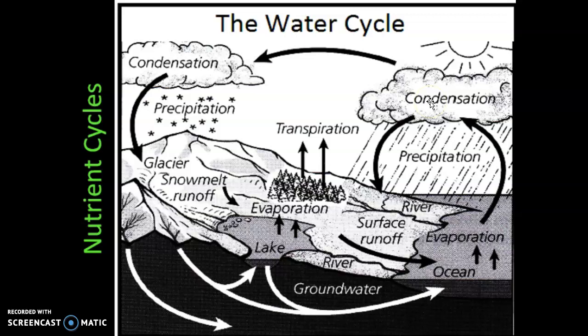As those water droplets fall to the earth, it falls in the form of precipitation, which could be rain or snow. A lot of familiar terms on this diagram. The one term that might be new to you is a process called transpiration, which is nothing more than evaporation of water through the surface of leaves — just evaporation through plants. But the water cycle has literally been part of the science curriculum since first grade, so I'm confident you're pretty comfortable with it already.